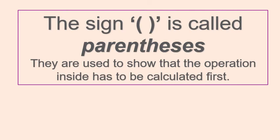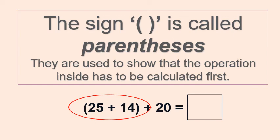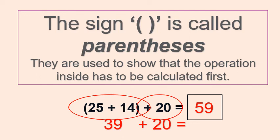The open and close round brackets are called parentheses. They are used to show that the operation inside has to be calculated first. For example: (25 + 14) + 20 equals blank. Step one: add the numbers inside the parentheses first — twenty-five plus fourteen equals thirty-nine. Then add the next addend, which is twenty — thirty-nine plus twenty equals fifty-nine. That's how you calculate using parentheses.